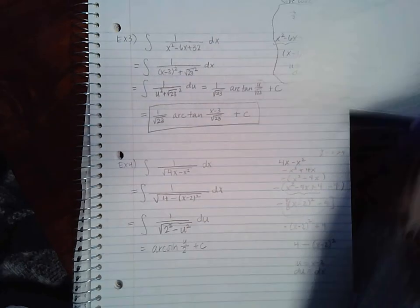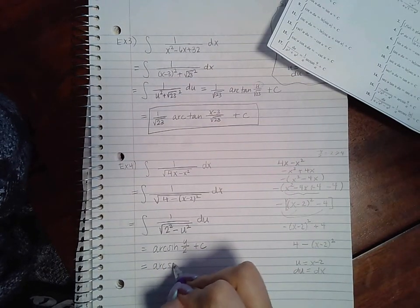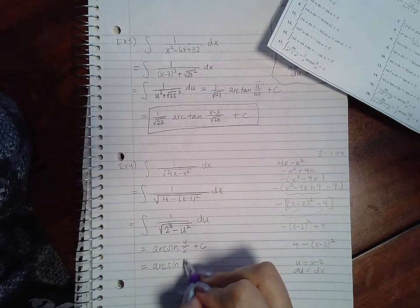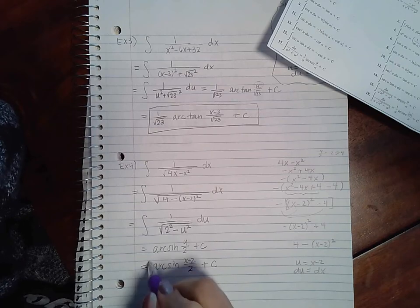And then we do have the back substitution, so u was x minus 2, and now the problem is complete.